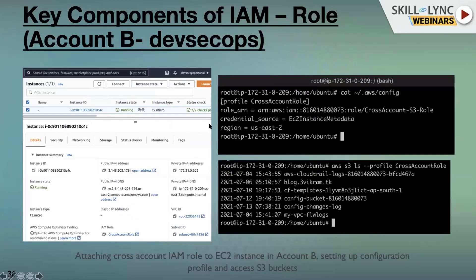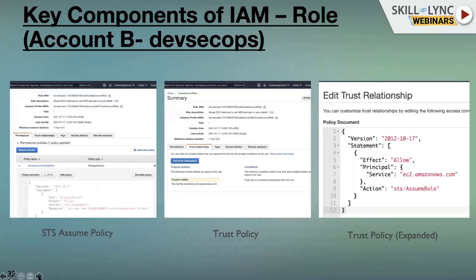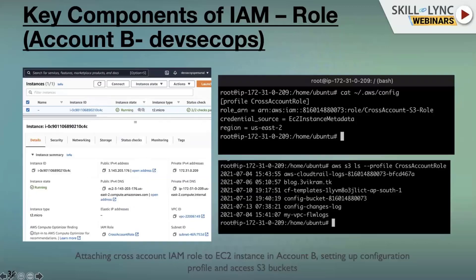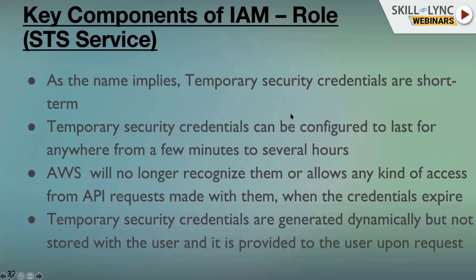In Scenario 2, there are S3 buckets in Account A that need to be accessed from Account B via EC2 instances. To do this, we spin up an EC2 instance in Account B and attach the cross-account role that was previously created. Once that role is attached to the instance, you can start executing commands. There's no need to configure any credentials - just start using AWS CLI commands or the AWS SDK within that EC2 instance to access the S3 resources.